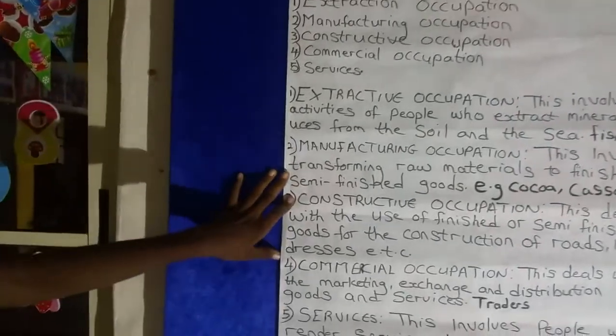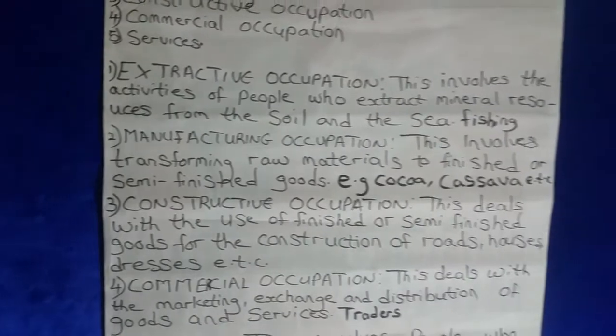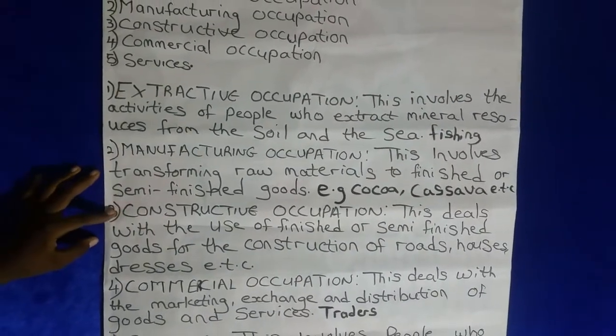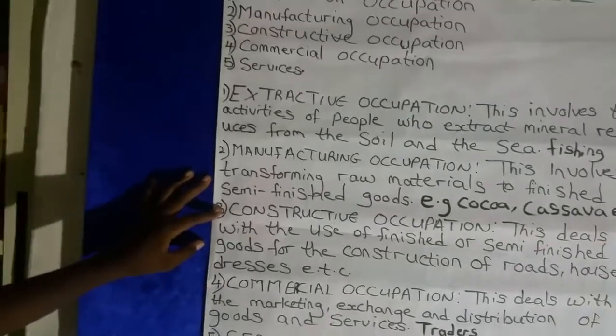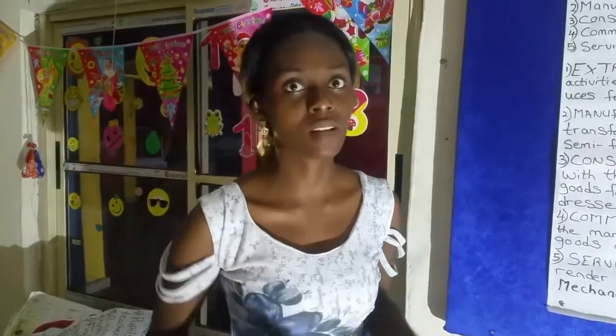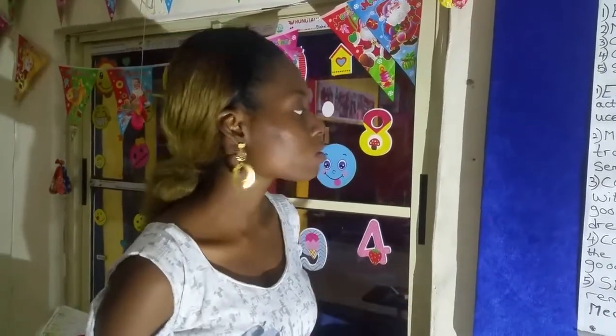The next one is constructive occupation. This deals with the use of finished or semi-finished goods for the construction of roads, houses, and dresses. For example, if you are constructing roads, you use different raw materials like gravel, sand, slain, and water. All of these things are used for constructive occupation — you construct roads, churches, buildings, and houses.